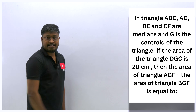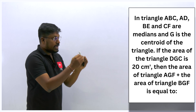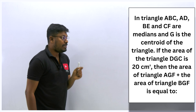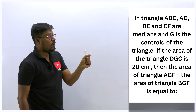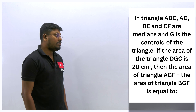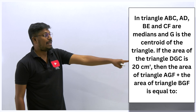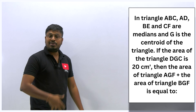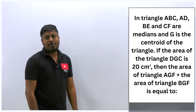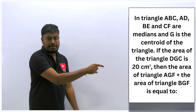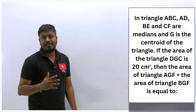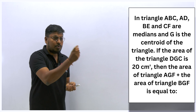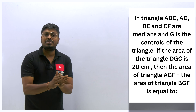Here is another question from the SSC exam: In triangle ABC, AD, BE, CF are the medians. If the area of triangle DGC is 20 sq cm, then the area of triangle AGF plus area of triangle BGF equals what? Since drawing three medians splits the triangle into six equal halves, and one half is 20, all halves are 20. We need two triangle areas: 20 + 20 = 40 sq cm.